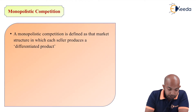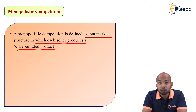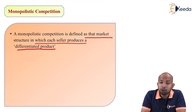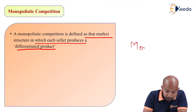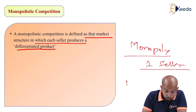Monopolistic competition is defined as that market structure in which each seller produces a differentiated product. Every time monopolistic competition is referred to, note that I am not discussing monopoly — I am discussing monopolistic. There is a lot of difference between the term monopoly and monopolistic. Monopoly refers to only one seller who is selling the product.